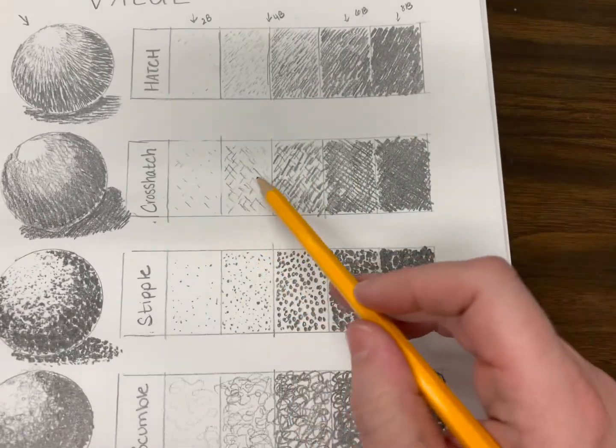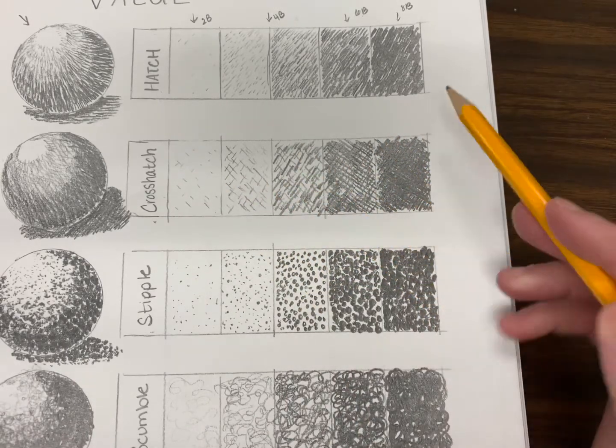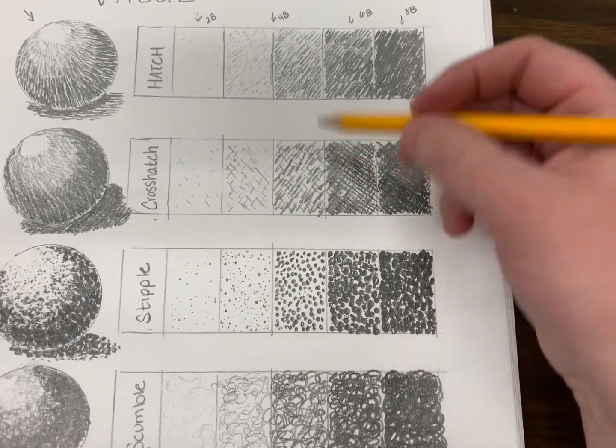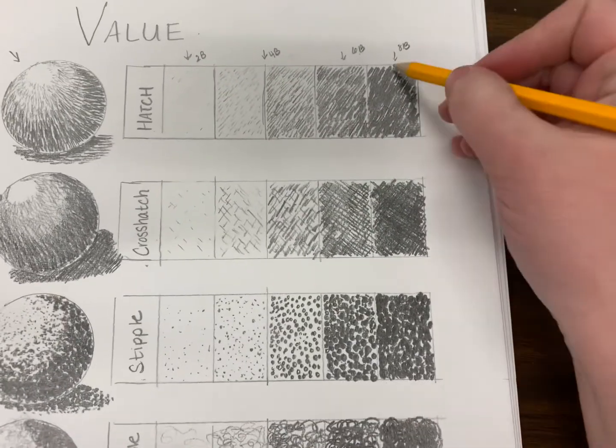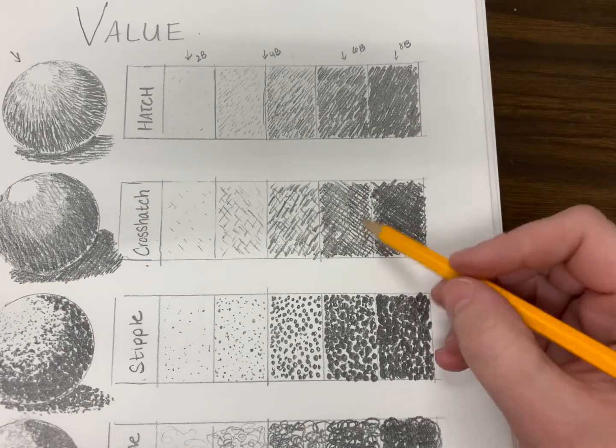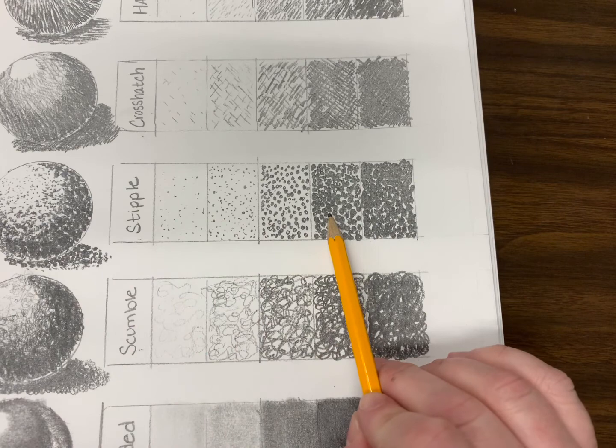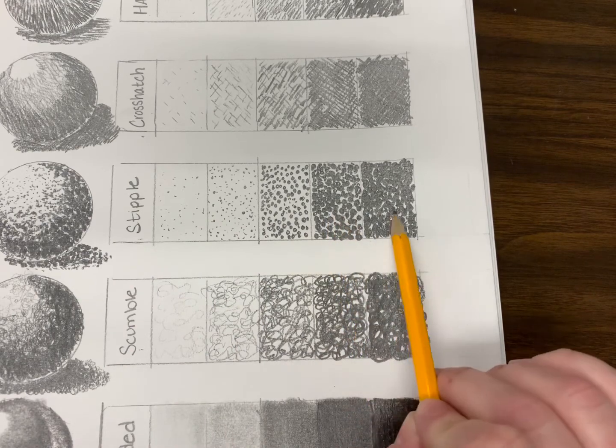Same thing—adding more space in between my marks as well as applying a little bit more pressure, but a lot of times I just depend on changing the graphite pencil. It's just naturally getting darker. For example, this stippling—my dots started to get a little bit bigger, closer together.